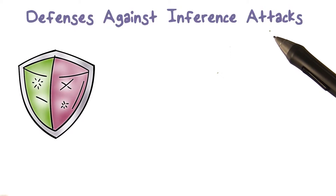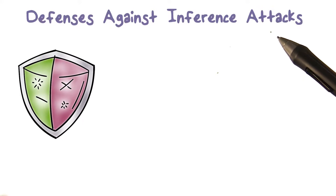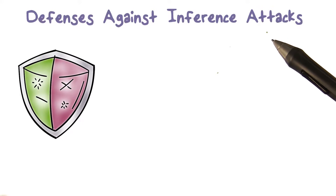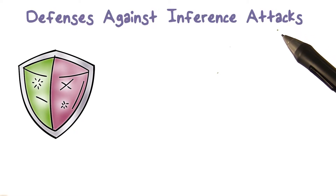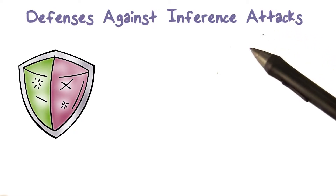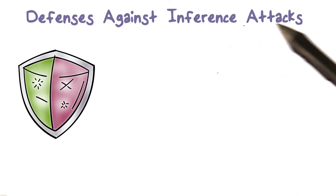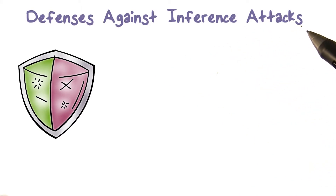We saw examples of inference attacks. Two quick examples: when the query was an average of an exam grade that was authorized, but the result was disclosing somebody's grade, which we didn't want to happen. So obviously, we want to have defenses against these kinds of inference attacks.